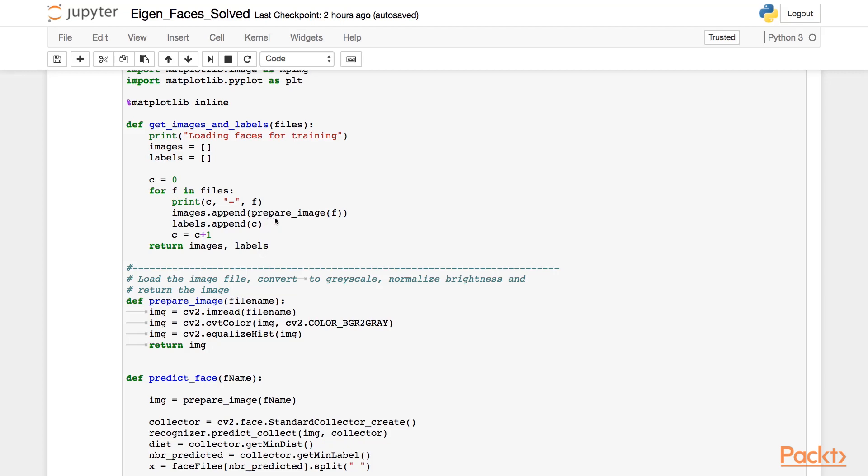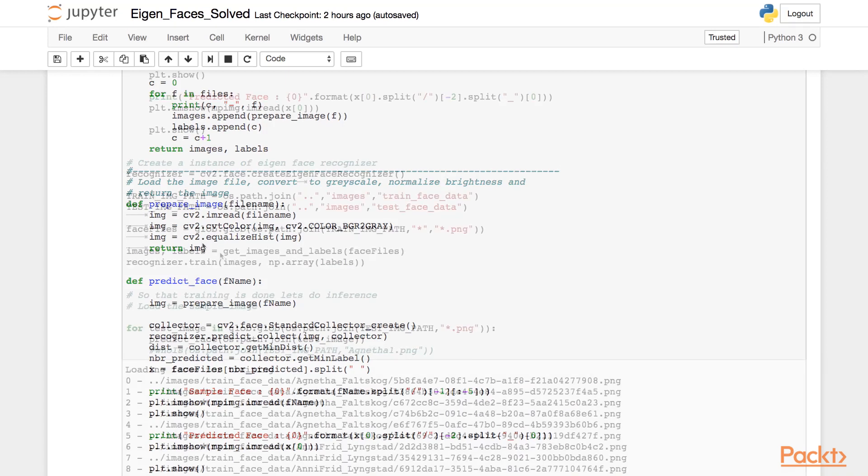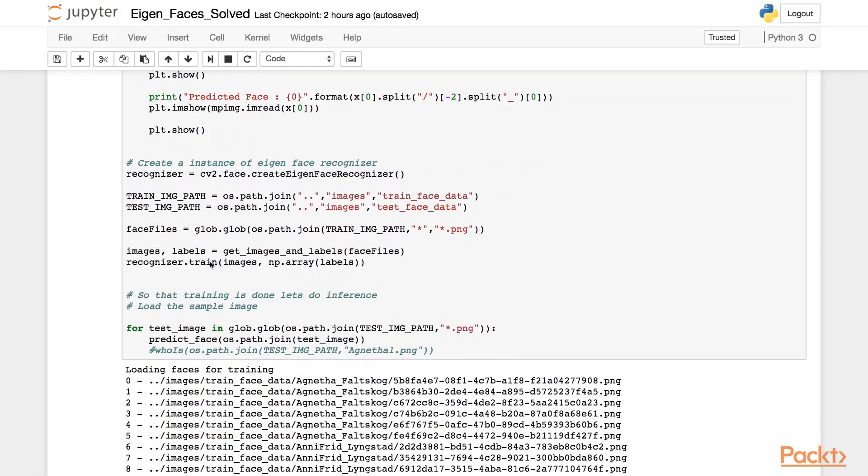Let's see the implementation of prepare image. In prepare image, we read each image and convert it to grayscale, followed by histogram equalization, which normalizes the brightness of the image, and returns the image. Next, we call function train of object recognizer and pass the images and the corresponding labels.